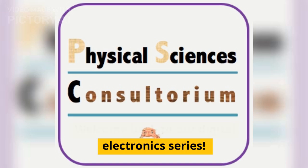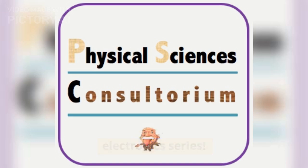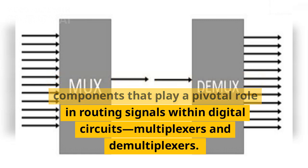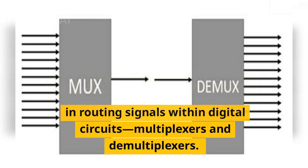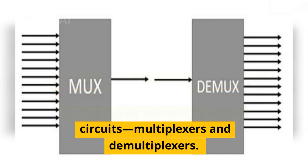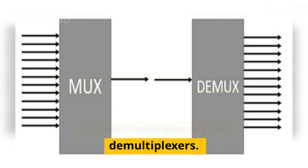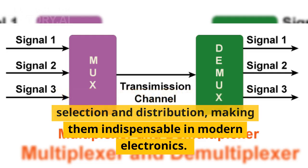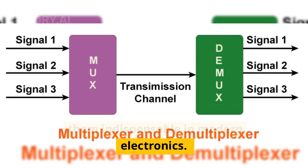Welcome back to our digital electronics series. Today we're exploring two essential components that play a pivotal role in routing signals within digital circuits: multiplexers and demultiplexers. These devices are critical in data selection and distribution, making them indispensable in modern electronics.